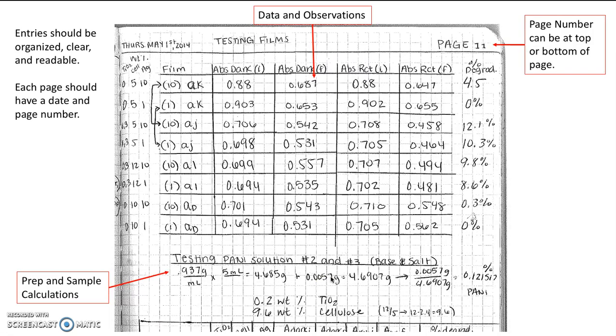Again the entry should be organized, clear, and readable. If you are able to plan in advance what that data collection is going to look like, then you can make a nice data table that has enough room for you to collect all your information. You'll notice this student actually thought of some other data that needed to be recorded and so she wrote those in the side notes. Here some percent degradation, but they're still readable to anybody who needs to read them and it's clear what is happening here.